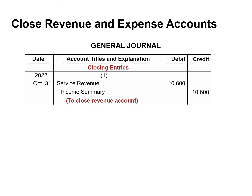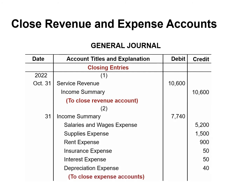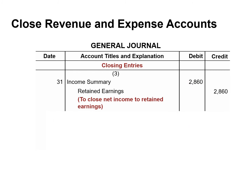The first closing entry will close revenue into the temporary account income summary — we debit service revenue and credit income summary for $10,600. The second closing entry will close expenses into income summary — we debit income summary for the total of all expenses and credit each individual expense account. The balance in the income summary account is net income, which is the difference between revenue and expenses, or $2,860. The third closing entry will debit income summary and credit retained earnings for the amount of net income, or $2,860.